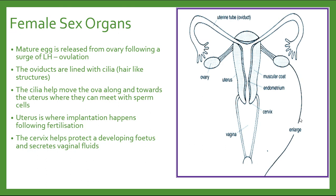When the pituitary gland releases a surge of luteinizing hormone, this is the signal for ovulation to take place. The mature egg that had developed inside the follicle within the ovary will now leave the ovary and enter into the oviduct. The oviduct is lined with cilia, these small hair-like structures, which are responsible for moving the egg along down the oviduct where it could potentially meet with a sperm cell for fertilization to take place. If this were to happen, the uterus is where the fertilized egg will be implanted in the lining of the uterus wall. The cervix plays a role in helping to protect the developing fetus and also secretes the vaginal fluids.